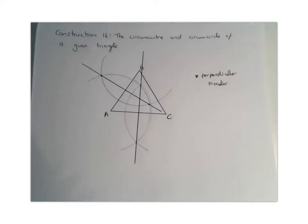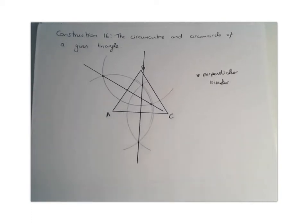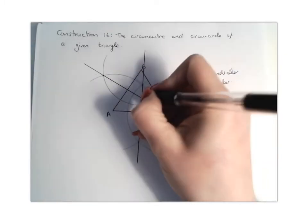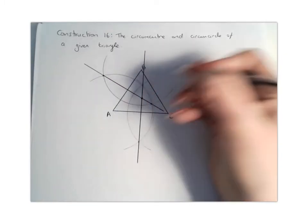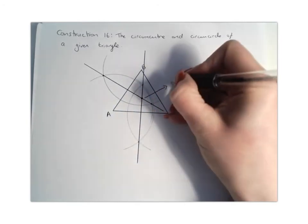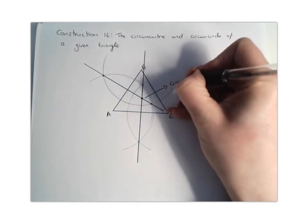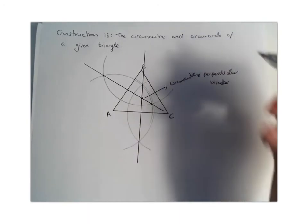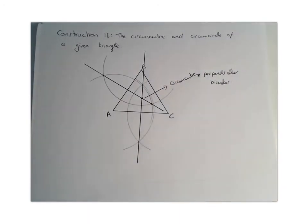Now we've done the hard work—we've found where they intersect each other, and that is going to be our circumcentre. This point here is your circumcentre, and what we need to do now is draw our circumcircle.